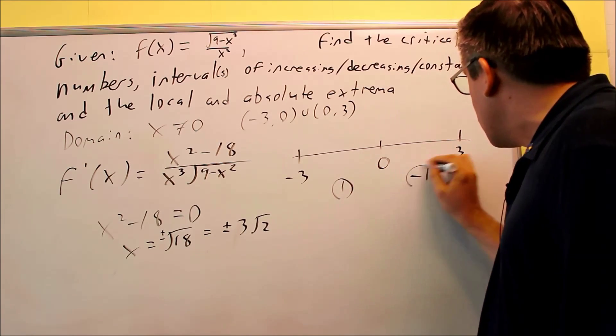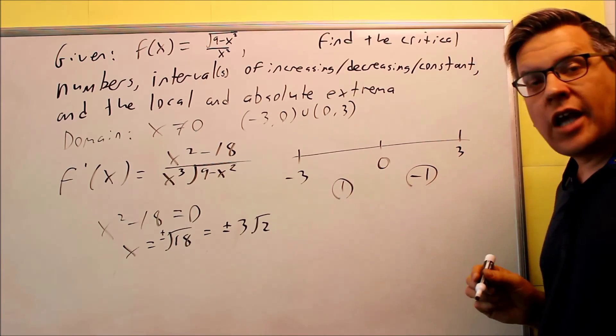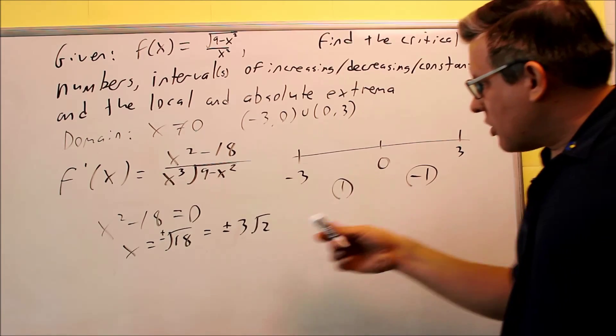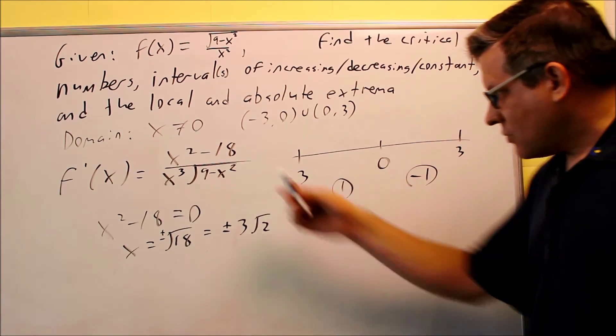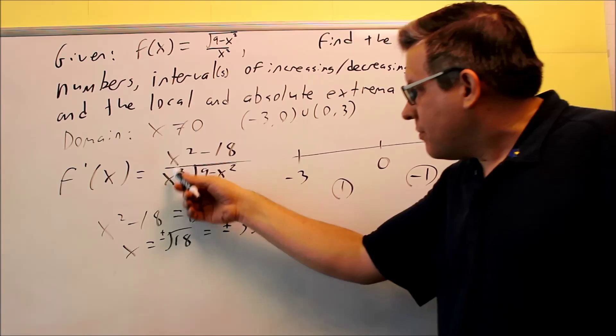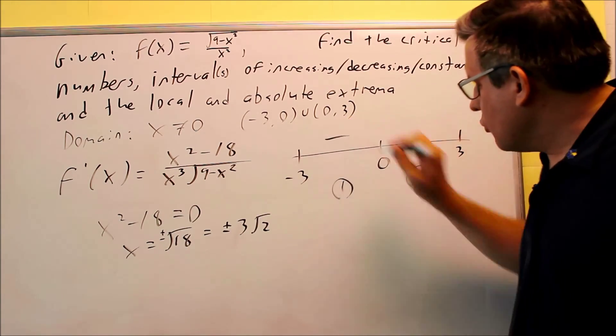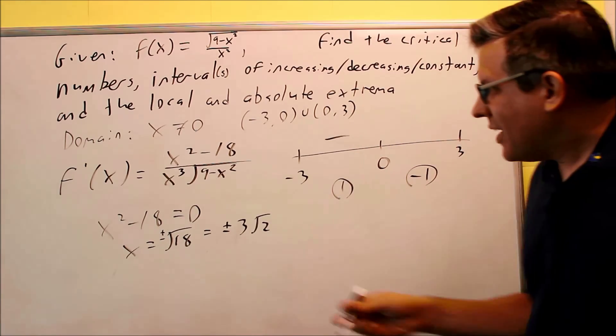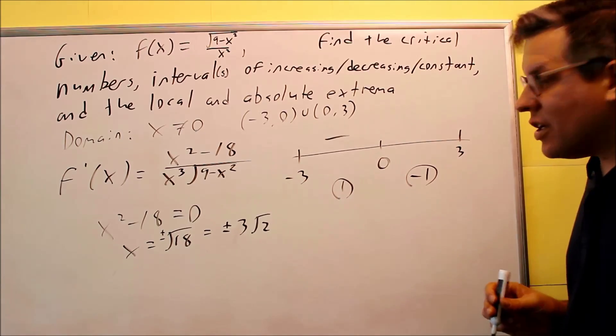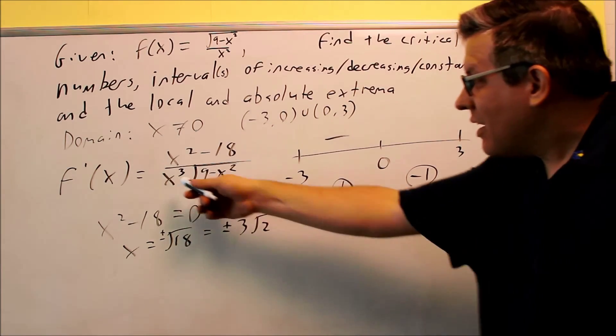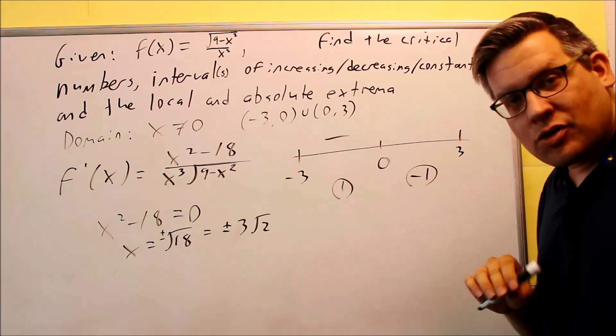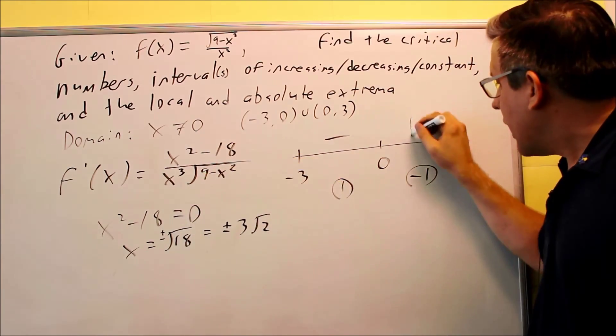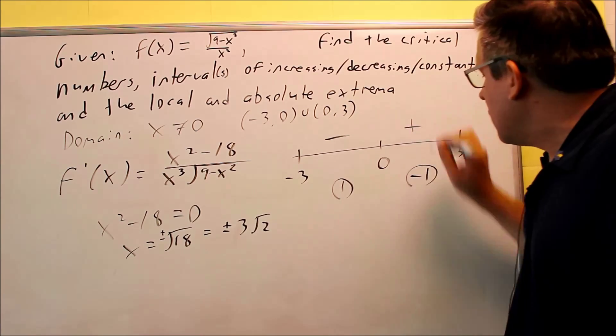So the only test numbers I'm going to do will be 1 and negative 1. I want to put these into the derivative function. So I have a 1 on top, negative I get on the top, on the bottom I get a positive, which means that I get a negative for the first piece. Then I'm going to put a negative 1. Negative 1 squared minus 18 is negative. Negative 1 cubed is also negative. This is positive. So I get negative over negative, I get a positive there for this problem. So I get a plus for this region.